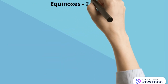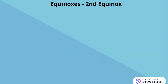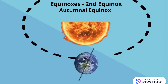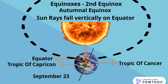Now I will tell you about the second equinox, that is also known as the autumnal equinox. In this equinox, the sun rays fall vertically on the equator, so the equator is hot and the temperature is distributed equally. It is similar to the first equinox, except that it marks the beginning of the autumn season.